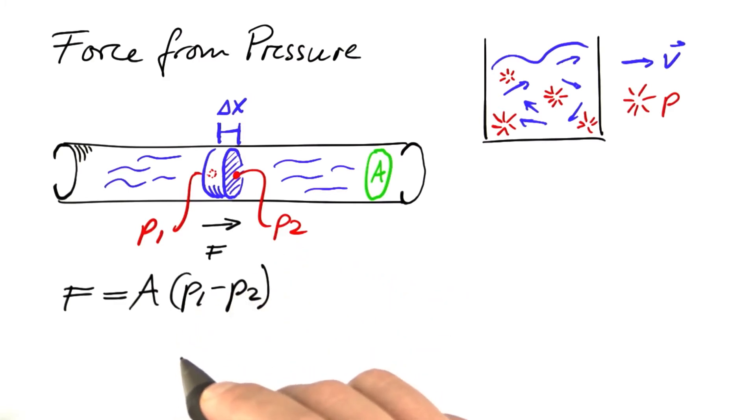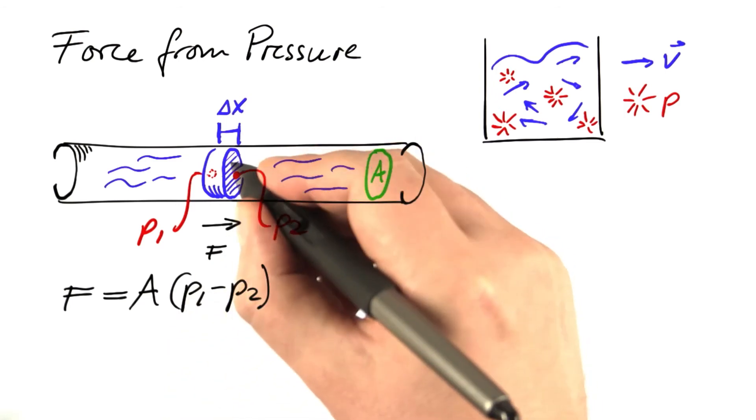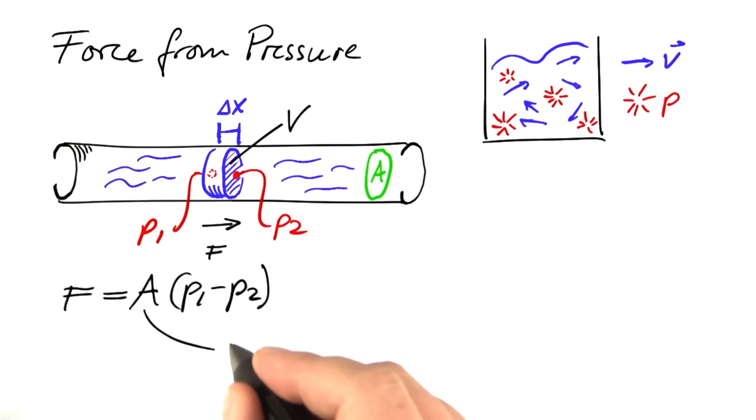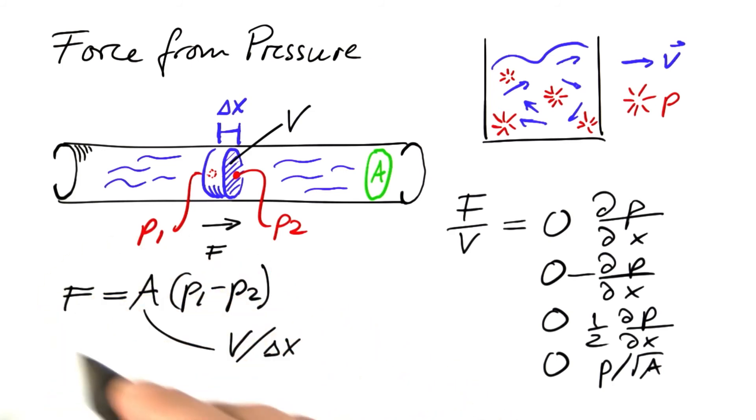If you double the area, you double the force. If we say that this piston has a volume of V, then the area of course is the volume of the piston divided by its width. So if we want to use this as part of our differential equations, what should we be writing? What's the force per volume?